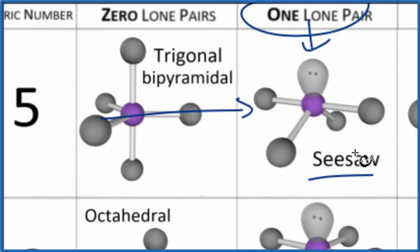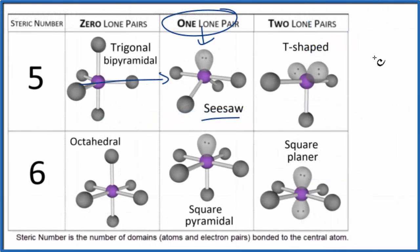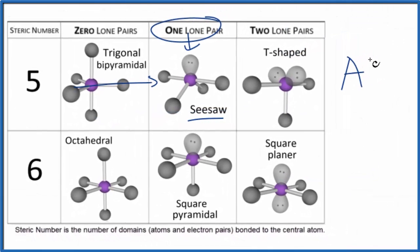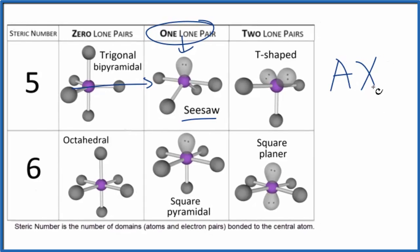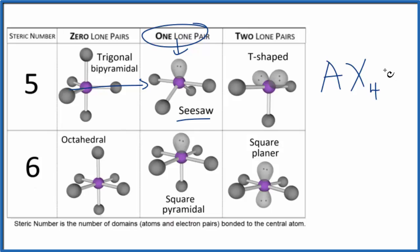We could also use what's called the AXe notation to figure out the molecular geometry. So A, that's our central xenon atom. X, that's the number of atoms attached. We have two oxygens and two fluorines, so four atoms attached. E, that's the number of lone pairs. We have one lone pair. Often you'll see one written, sometimes not. So that's AX4E1. And if you look this up on a table, or if you'd memorized it, that's the seesaw molecular geometry.